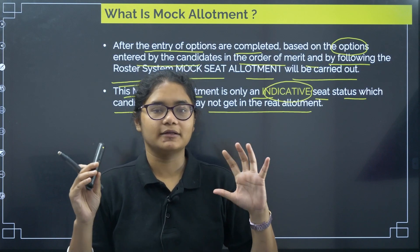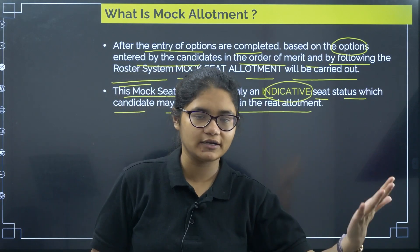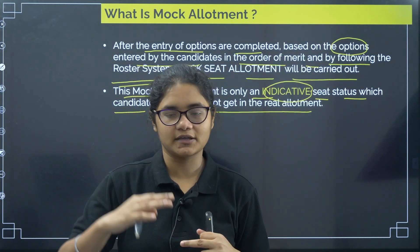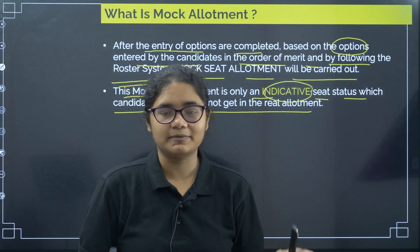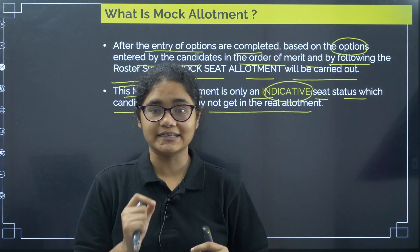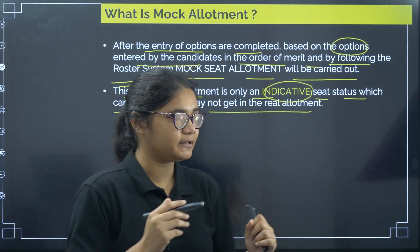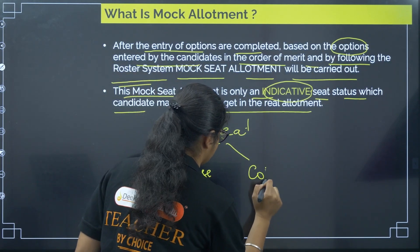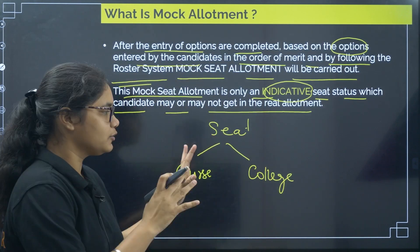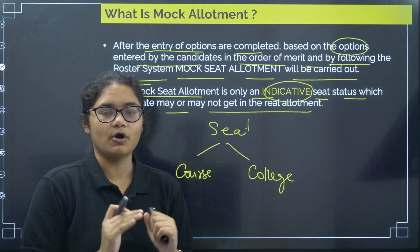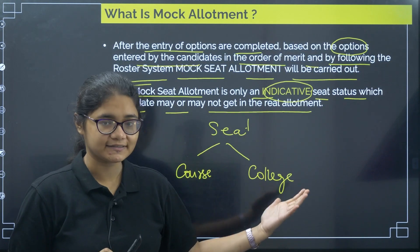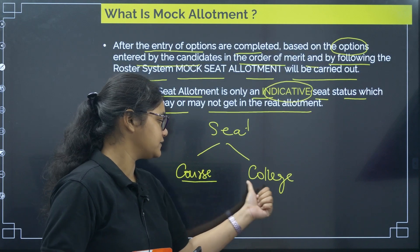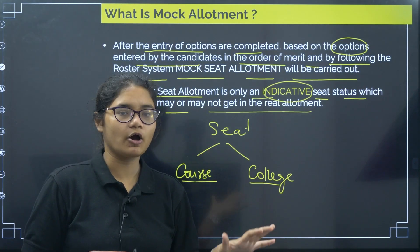So what is this mock allotment in simple terms? You have already done your preferences and your preferences list is submitted to the KEA. Now they will follow the roster system — they will check your cutoff and according to the preference list you have given, which course in which college you will get will be told to you. That is what is called mock allotment. But mock allotment is not a guarantee that you will really be getting that college and course — you may or may not get it.